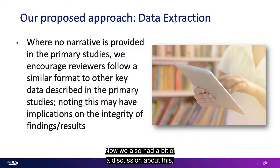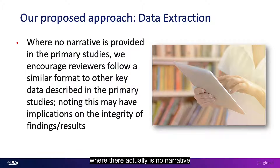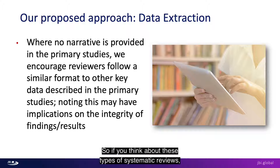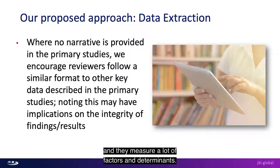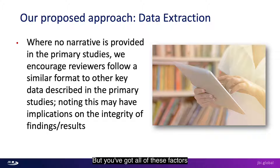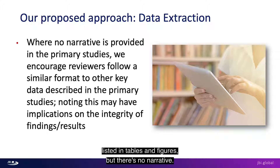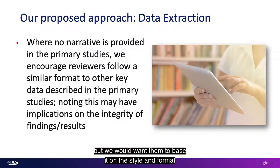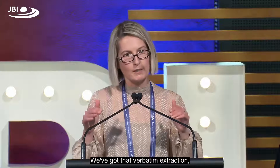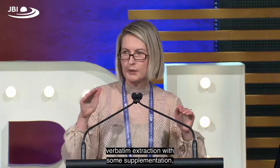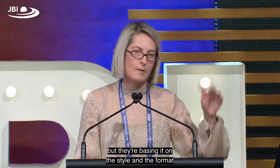There will be situations where there is actually no narrative provided in the primary studies. With these types of systematic reviews — often asking questions of barriers, enablers, factors, or determinants — studies may only report in the narrative those that are statistically significant, while all other factors are listed in tables and figures with no narrative. In those circumstances, reviewers will obviously have to create their own narrative, but we would want them to base it on the style and format of the key data described in the primary studies. So we have three approaches: verbatim extraction, verbatim extraction with supplementation from the primary study, and reviewer-developed narrative based on the style and format of the primary studies.